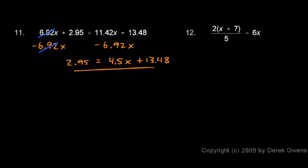Now let's continue to solve this. I need to isolate x, so first I need to isolate the term that contains x. So I'll subtract this 13.48 from each side, and that will leave me with 4.5x on the right because these guys cancel out.